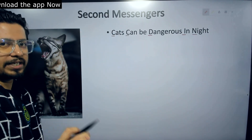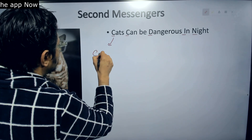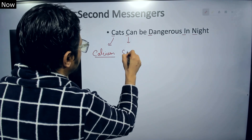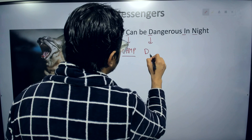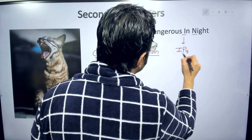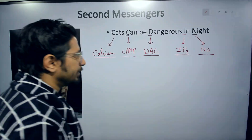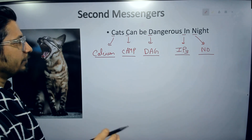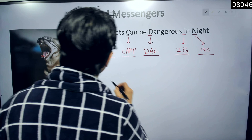Where the first C stands for calcium, the next C stands for cyclic AMP, the D stands for diacylglycerol or DAG, the I stands for IP3 — inositol trisphosphate — and N stands for NO, or nitric oxide. These are the five very crucial major second messengers in our body.